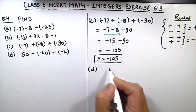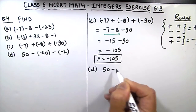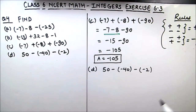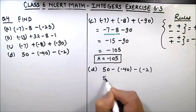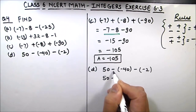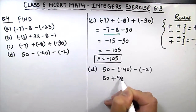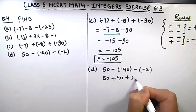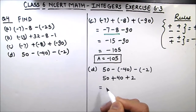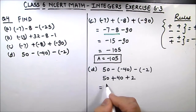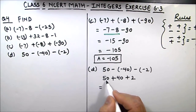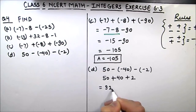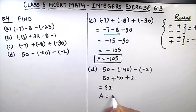The last part is 50 minus (minus 40) minus (minus 2). Opening the brackets: minus and minus becomes plus 40, and minus and minus becomes plus 2. So all three numbers are now positive: 50 plus 40 plus 2. 50 plus 40 is 90, and 90 plus 2 is 92. Our final answer is 92.